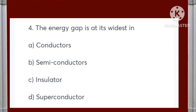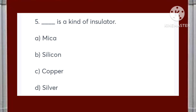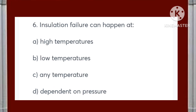The energy gap is at its widest in: conductors, semiconductors, insulators, or superconductors? Answer is C — insulators. Which of the following is a kind of insulator: mica, silicon, copper, or silver? Answer is A — mica.